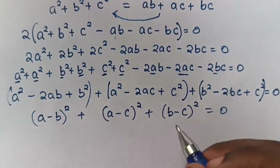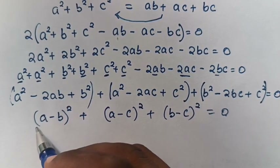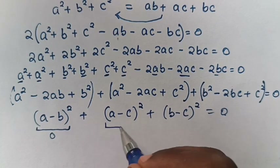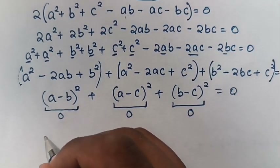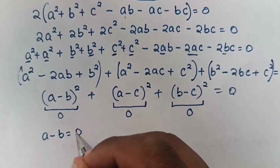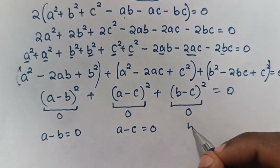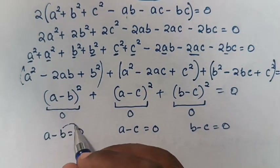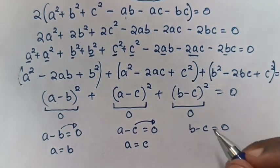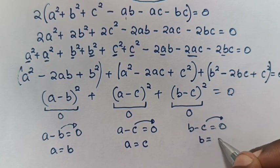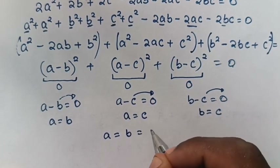Now we can see if all this is equal to zero, it means the square of each term is equal to zero. So a minus b equals zero, a minus c equals zero, and b minus c equals zero. Taking each to the right side: a equals b, a equals c, and b equals c. So a equals b equals c.